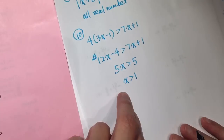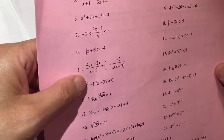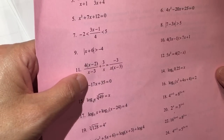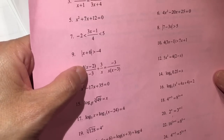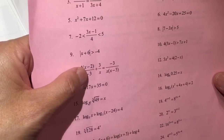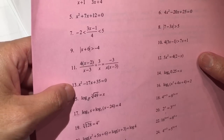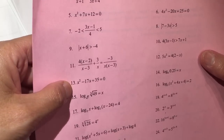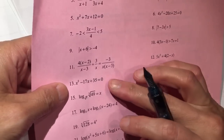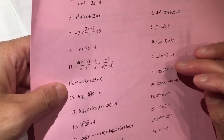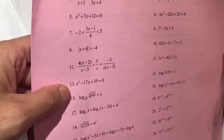5x greater than 5, x greater than 1. Number 11, the answer is quite a mess — I already did it. Number 12, the answer is also quite involved. Number 13, you need to use a polynomial function — no, not the quadratic formula — to do these two.